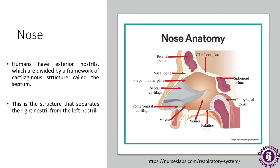First, we will discuss the nose or the nasal cavity. Here is a diagrammatic representation of the nose — the nose anatomy. All the structures are labeled in this detailed figure. There is a nose bone, a maxilla, and different bones which constitute the nose.